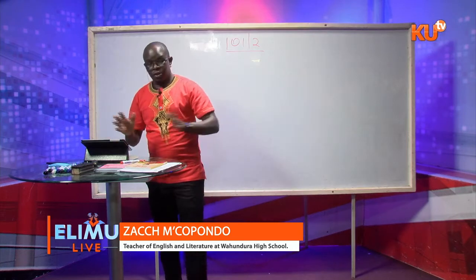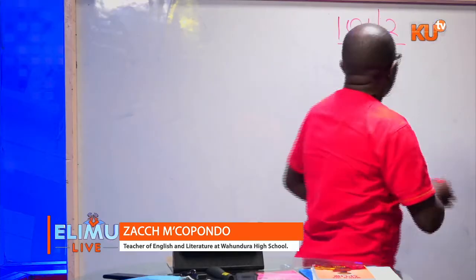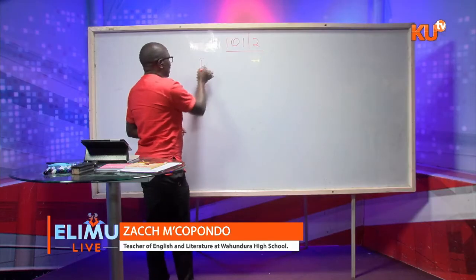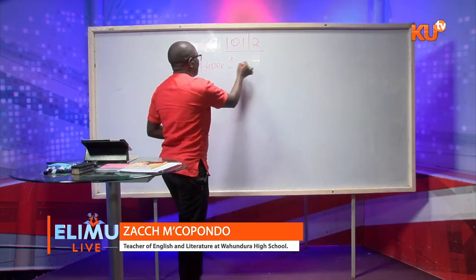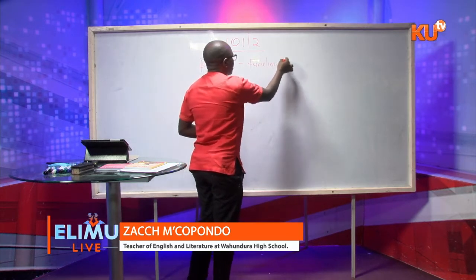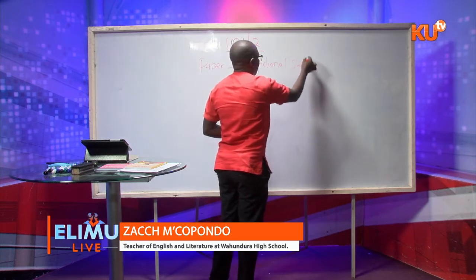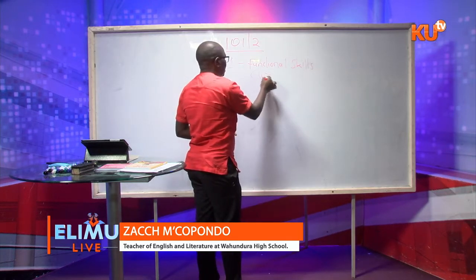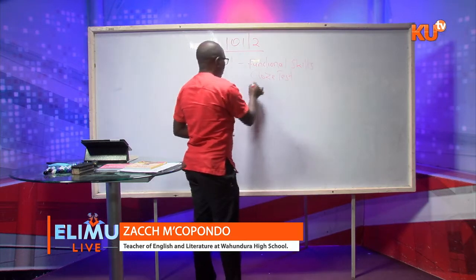So just a short review of what we agreed. Last week we said that English is divided into three papers. That is Paper 1, which is what you call functional skills. Functional skills are closed tests and oral skills.